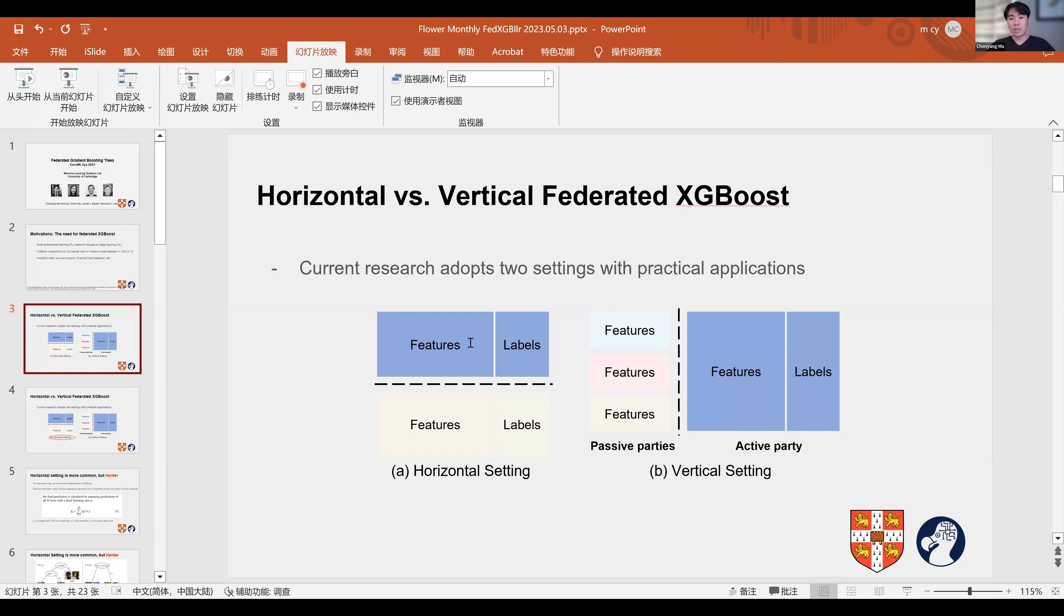In the vertical setting, the concepts of passive parties and one active party were introduced, where passive parties and active party share identical sample space but different feature space. As only the active party has the data labels, it naturally acts as the server. Both settings have practical applications.